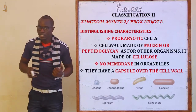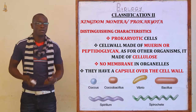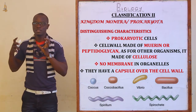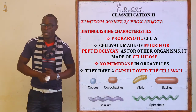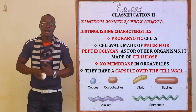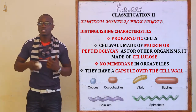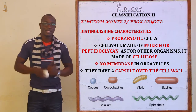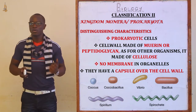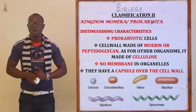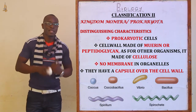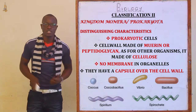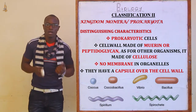What are the distinguishing characteristics — the peculiar characteristics only found in Kingdom Monera and not in other organisms? The first is that these are prokaryotic cells, meaning the nucleus is not bound in a nuclear membrane; the nucleus floats freely in the cytoplasm. The cell wall is made up of murein enzyme, also called peptidoglycan material, which is unique to these organisms. They have no membranes around their organelles, and they have a capsule over the cell wall.